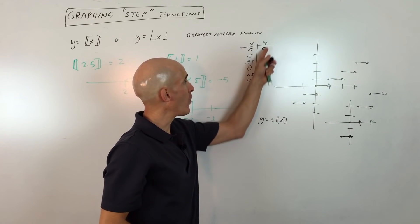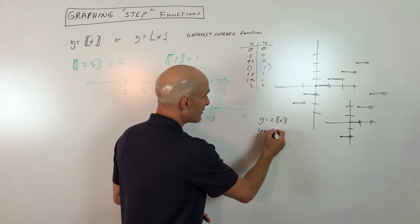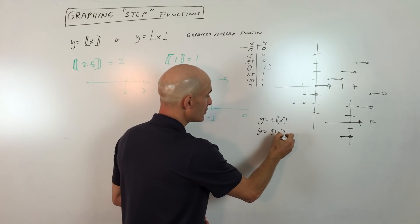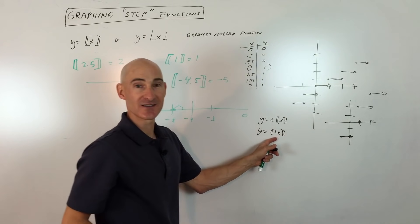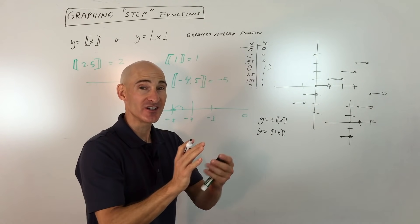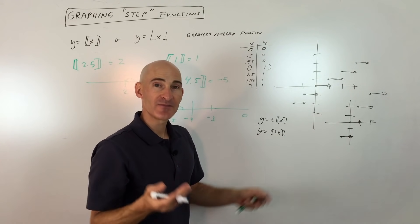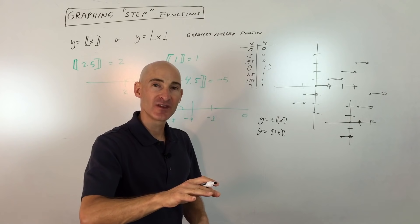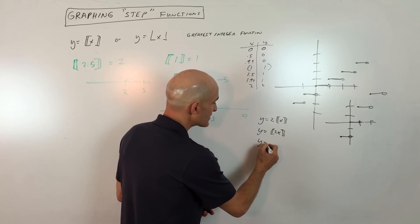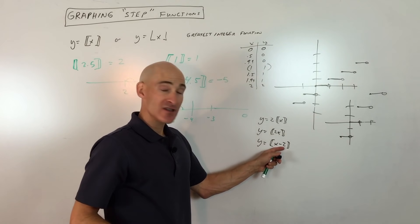Now what would happen do you think if I put the two grouped with the x? Well, if you said that it's going to be a horizontal compression you're absolutely right. The thing to remember is that when it's grouped with the x it has the opposite effect.